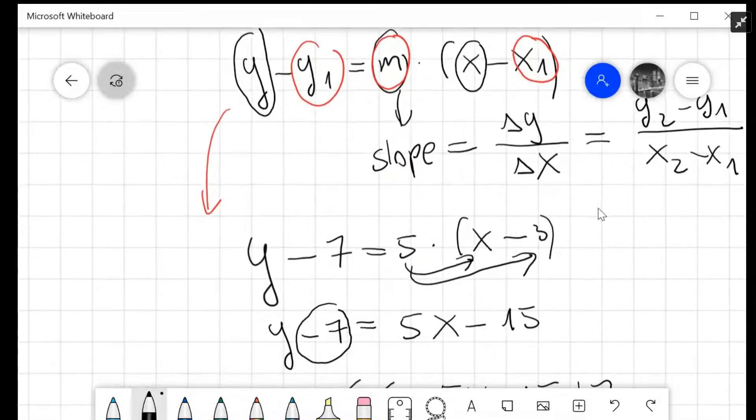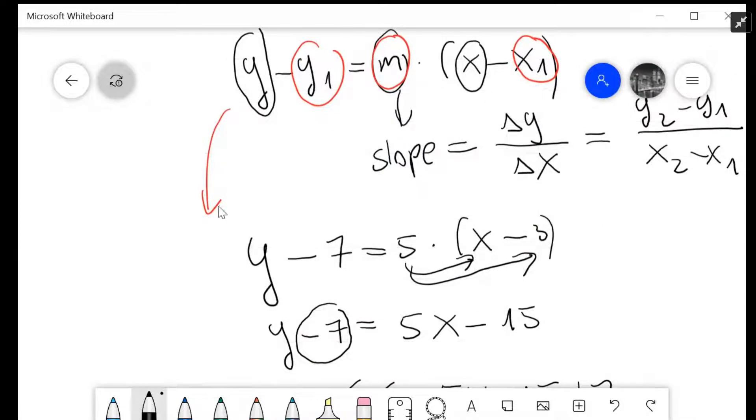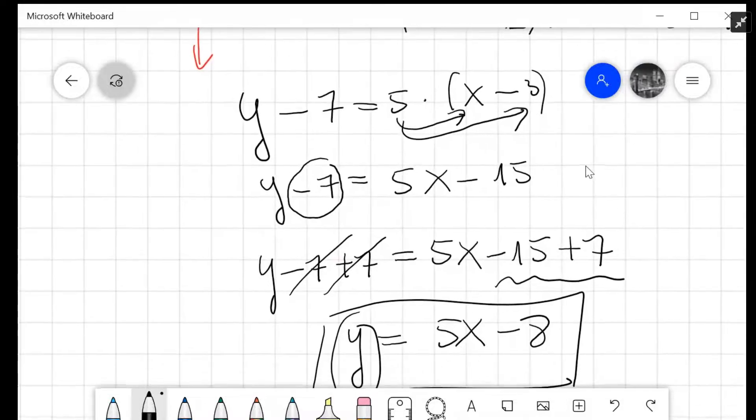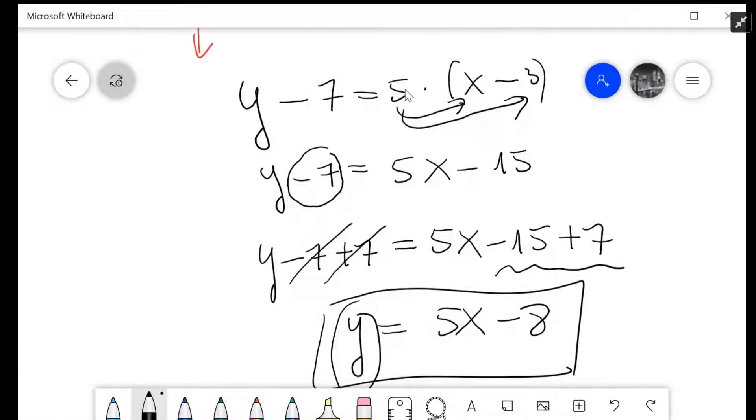This gives us the equation y - 7 = 5(x - 3). We want it in the form y = mx + b, so we'll solve for y.